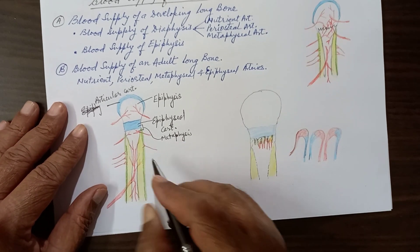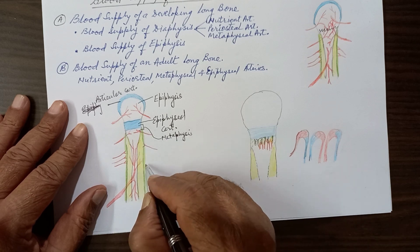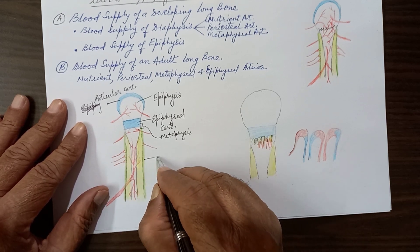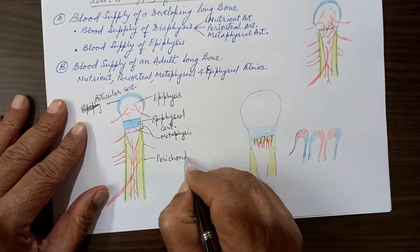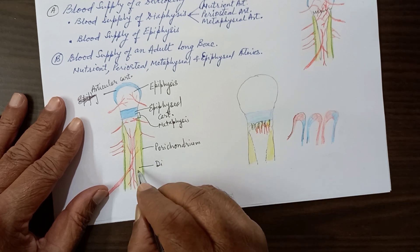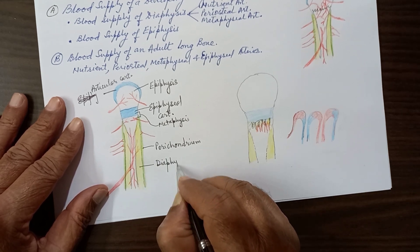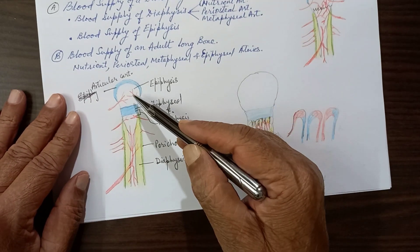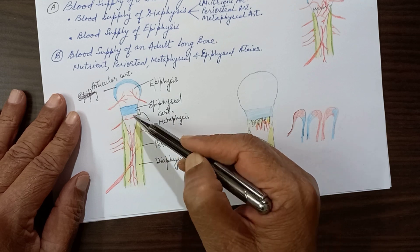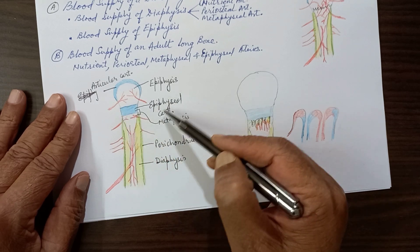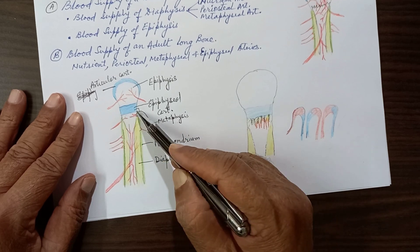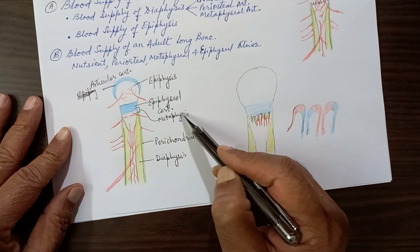The metaphysis is also part of the diaphysis. A membrane covering the shaft is the periosteum — in a developing bone it was previously perichondrium. The yellow color represents the compact bone of the shaft, the diaphysis. To summarize: epiphysis develops from the secondary center, diaphysis from the primary center, between them is the epiphyseal cartilage, and the adjacent region where cartilage is replaced by bone is the metaphysis.